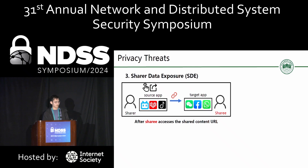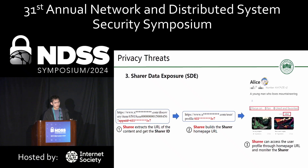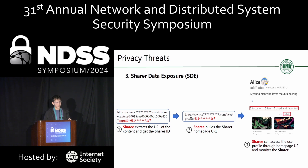The third pattern is shared data exposure. After the sharee accesses the shared content URL, she can utilize it to track the sharer by: first, extracting the URL and getting the sharer ID from the source app; then using the sharer ID to build the sharer's homepage URL; and finally, accessing the user profile through the homepage URL to monitor the sharer. Because of the sharer ID included in the URL, the sharee can access the sharer's account information on the source app. Normally the sharer and sharee only communicate in the target app, so the sharee should have no way to access the sharer's account information on the source app — but through this pattern, she can. This is information users would not want to disclose, as evidenced by our user study outlined in the paper.